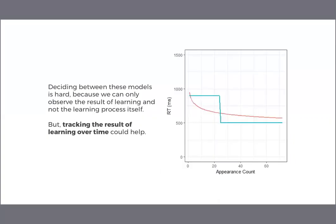Deciding between these different models is a really hard problem because we can't actually observe the learning itself as it happens in the brain — we simply don't have the technology for that. So instead, we have to track the result of the learning process. However, all of these theories predict that people will learn the statistical structure eventually, making it difficult to figure out which theory is best. One thing the theories do make different predictions about is how learning will progress over time. Many versions of associative learning theory predict a smooth gradual process, like the red curve, while versions of hypothesis testing and chunk-based memory theories predict a sudden change in learning, resulting in shapes more like the blue curve.